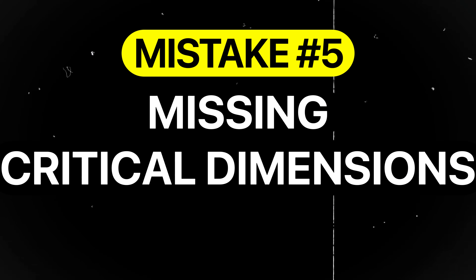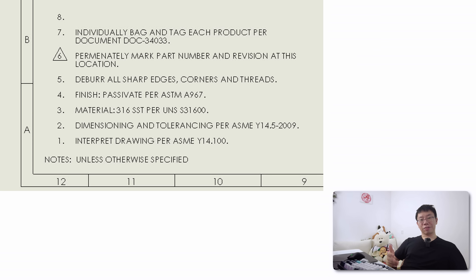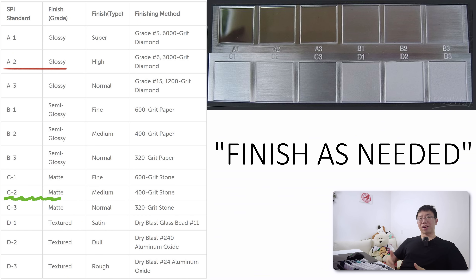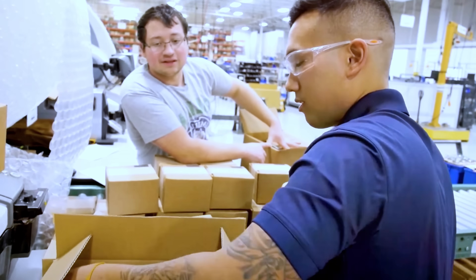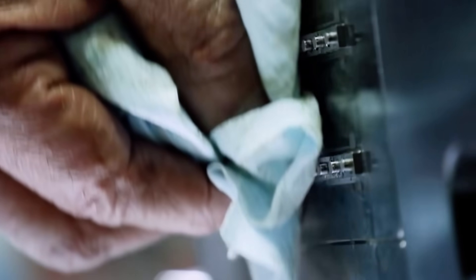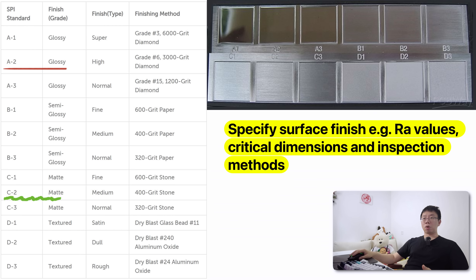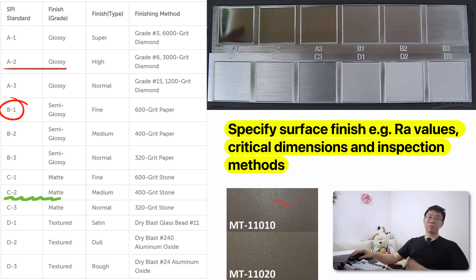Mistake number five is missing critical dimensions or using ambiguous notes on drawings. Notes like 'finish as required' without specifying surface finish or process requirements lead to inconsistent interpretations. For example, a supplier once shipped plastic housings with a glossy finish instead of the intended matte texture surface because the drawing note simply said 'finish as needed.' The glossy parts showed fingerprints and scratches easily, making them look cheap and unsuitable for the consumer product. The entire lot was rejected and production was delayed while new molds were re-textured. Always specify surface finish with RA values, critical dimensions, and inspection methods explicitly. For plastic parts, always note texture codes for mold surface treatments such as SPI-B1 or MT11010.